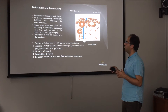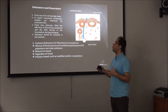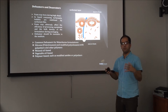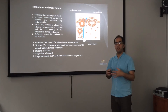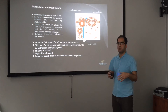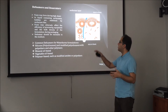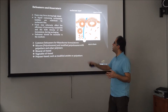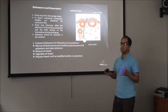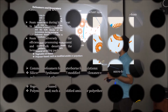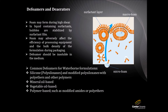Another component added to seed coating formulations is defoamers. During mixing, some bubbles or foams are created in the system. Without surfactants present, these bubbles would just rise to the surface and disappear. But because surfactants have already been added, they surround and stabilize the bubbles with a surfactant layer. Even at the surface, double layers form around each foam bubble, making them very stable.